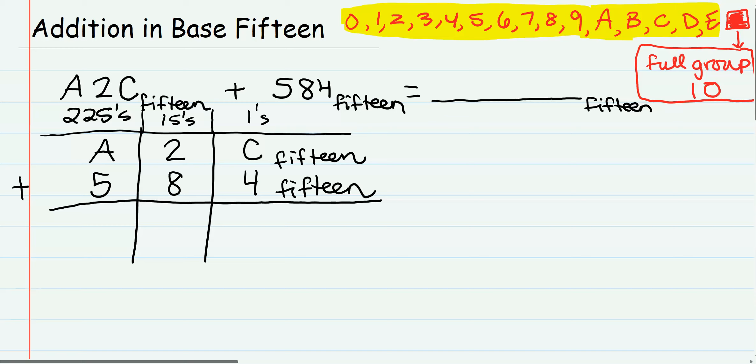If we start with C, C plus 4—well, if I need to make a full group of 15, C is right here. I need 1, 2, 3 to make a full group of 15. So I will break 4 into 3 and 1 more. C and 3 makes 1 full group of 15 plus 1 single. So that would be 11 in base 15. So I have here 1 in the first place value.